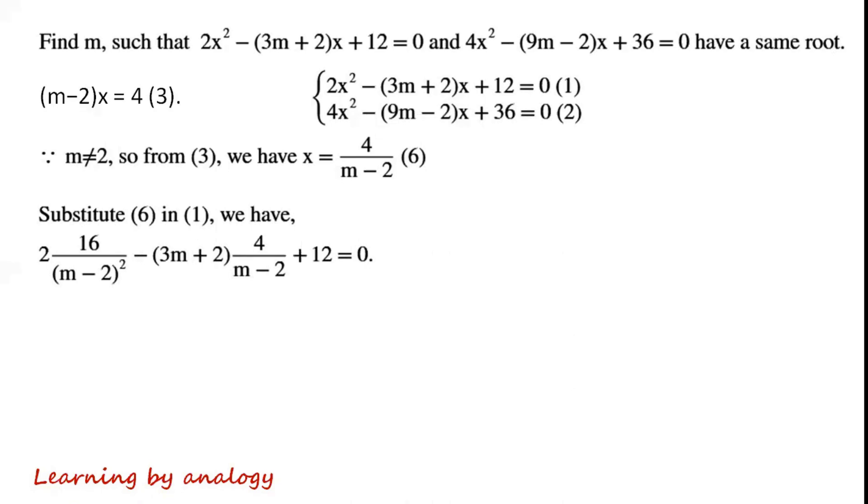We have 2 times 16 over m minus 2 all squared minus 3m plus 2 times 4 times 4 over m minus 2 plus 12 equals 0. By multiplying both sides of the equation by m minus 2 squared, we have 32 minus 4 times 3m plus 2 times m minus 2 plus 12 times m minus 2 squared equals 0.